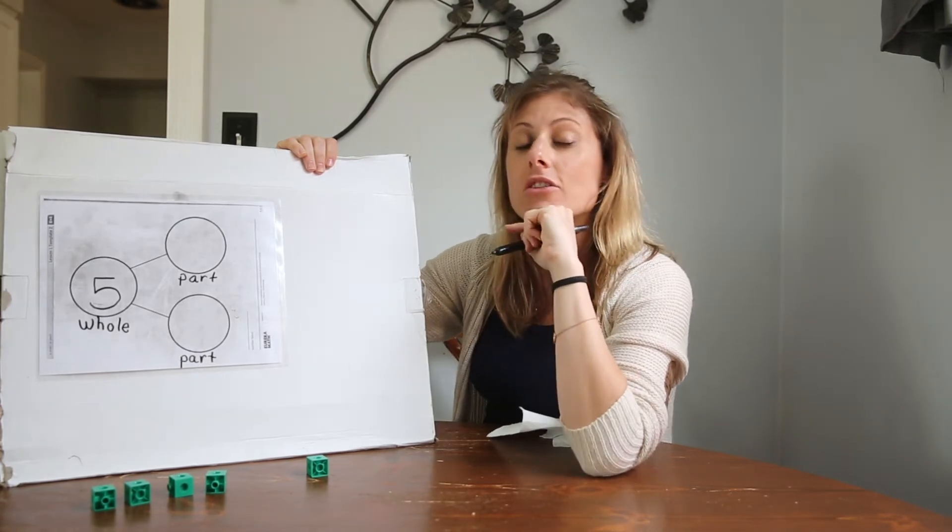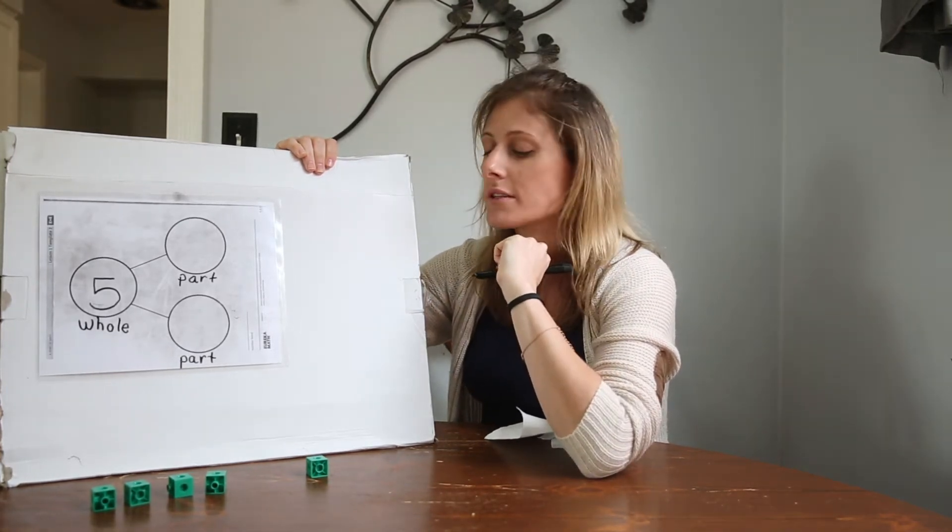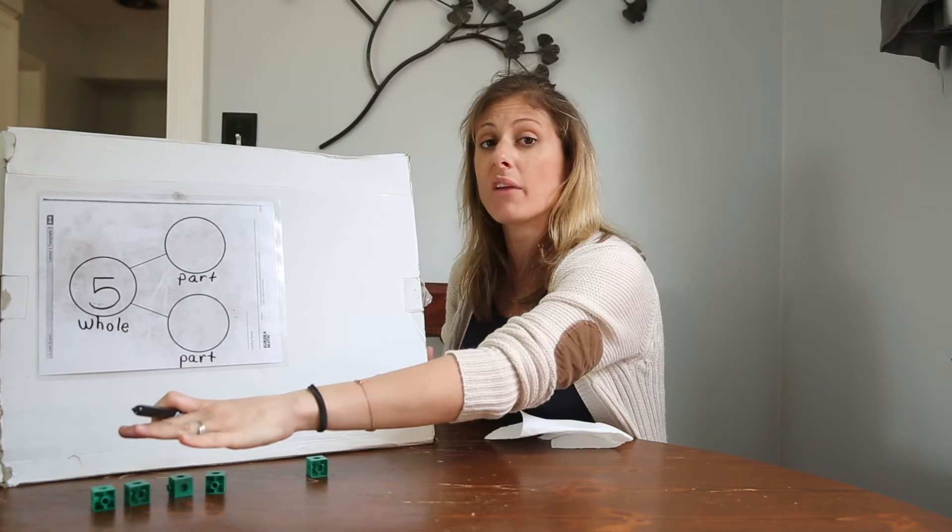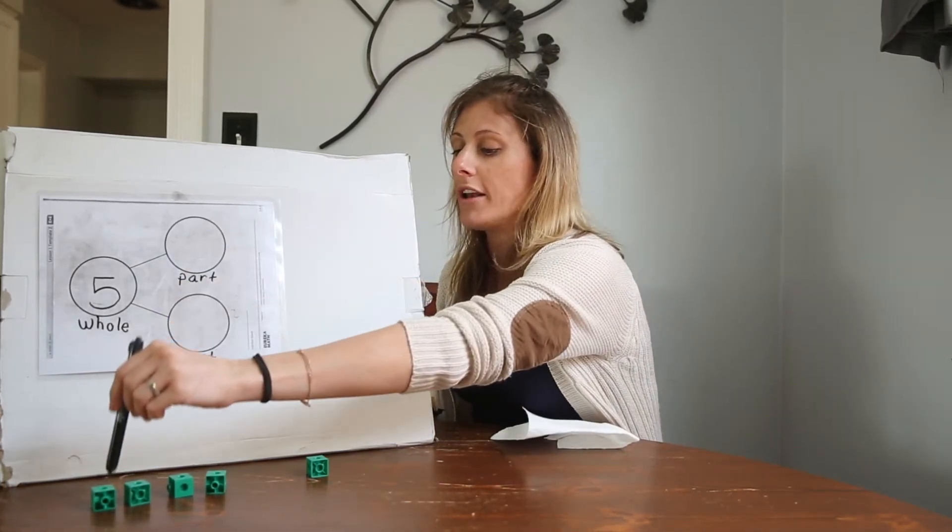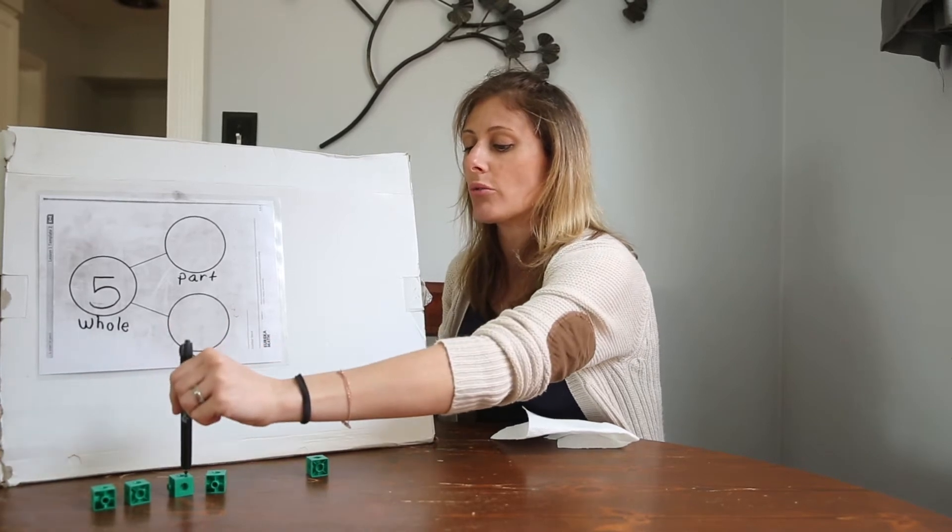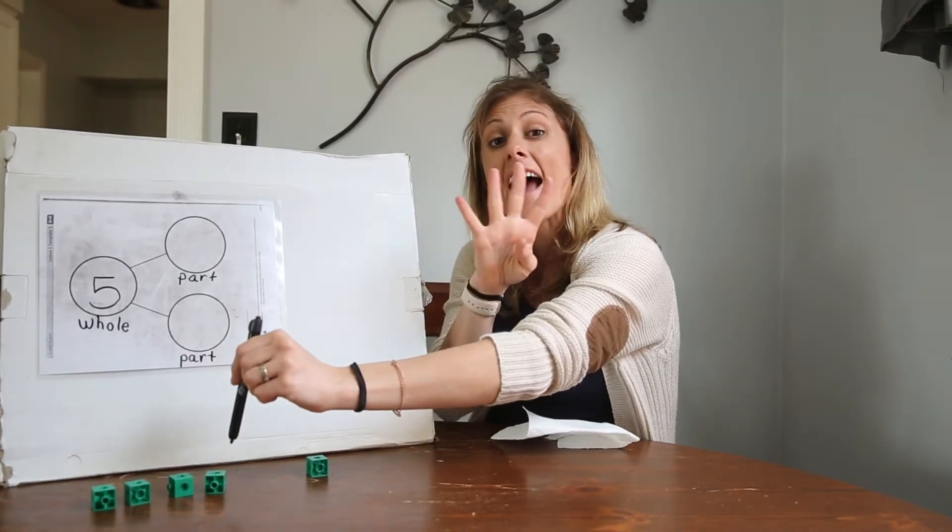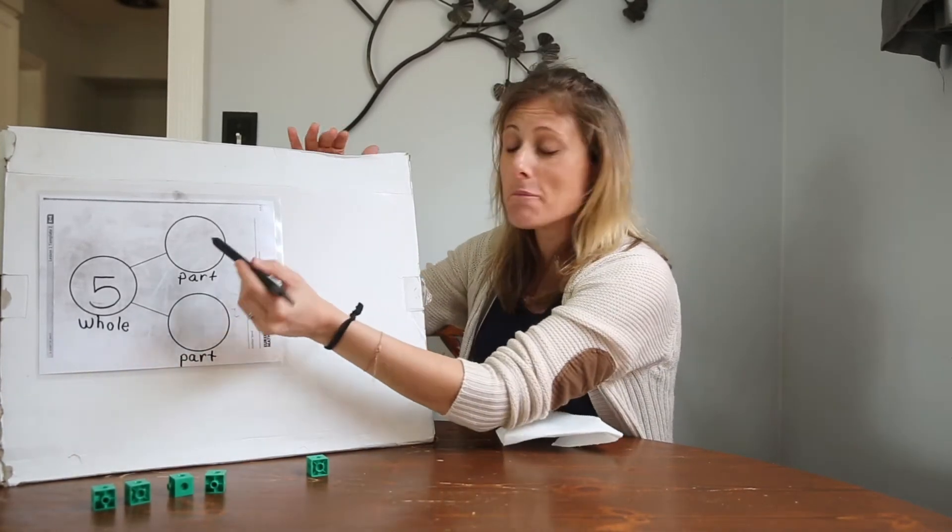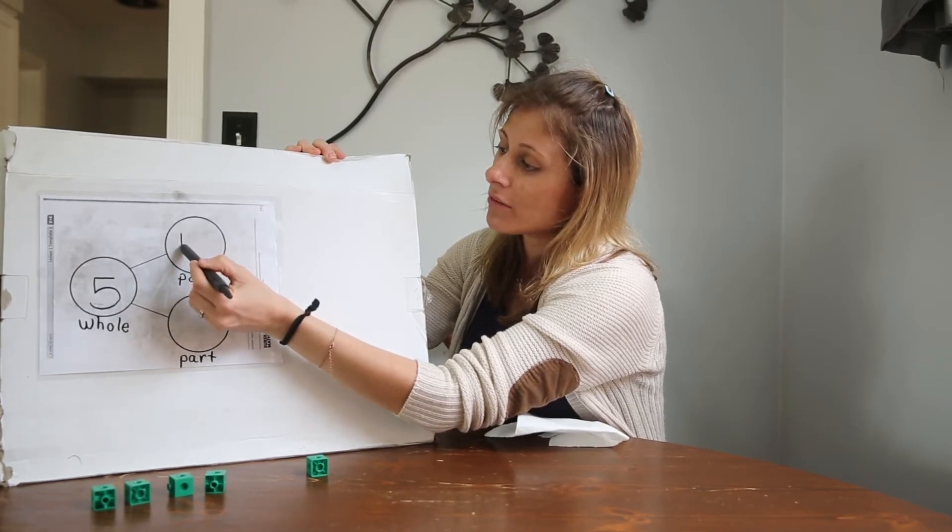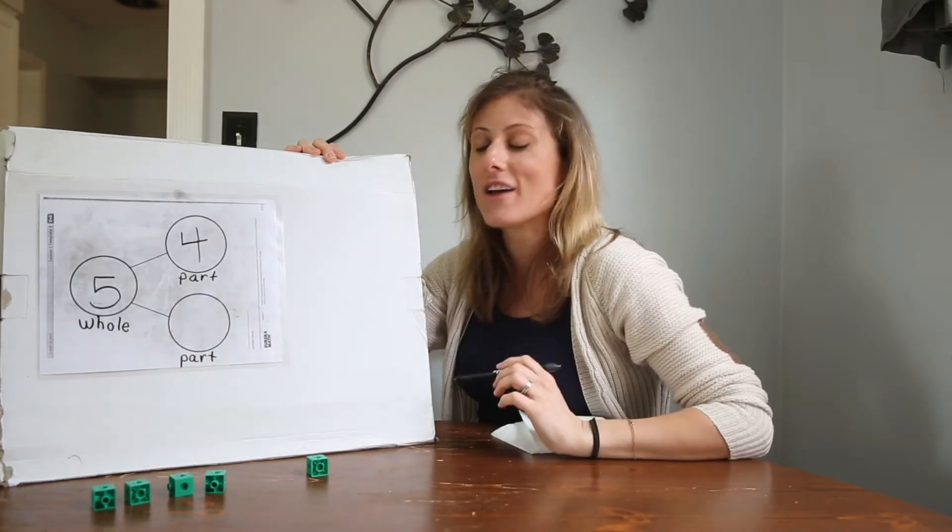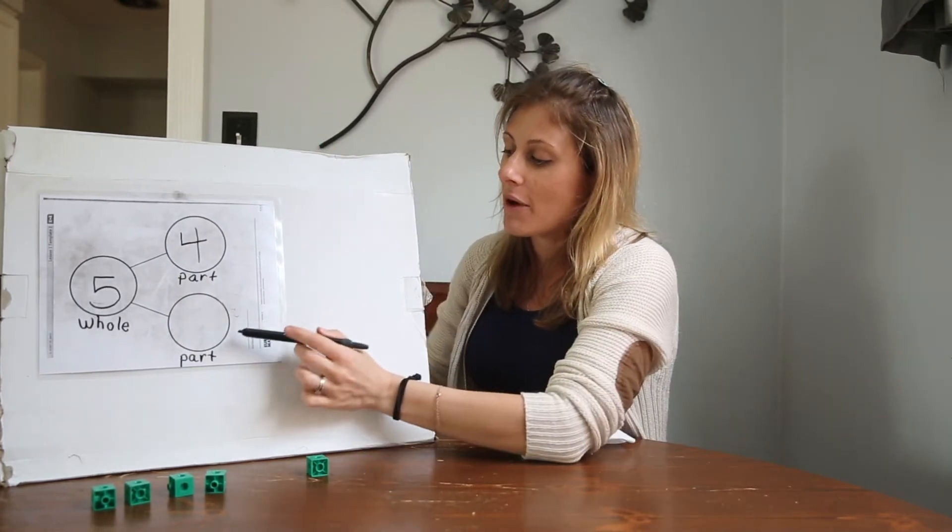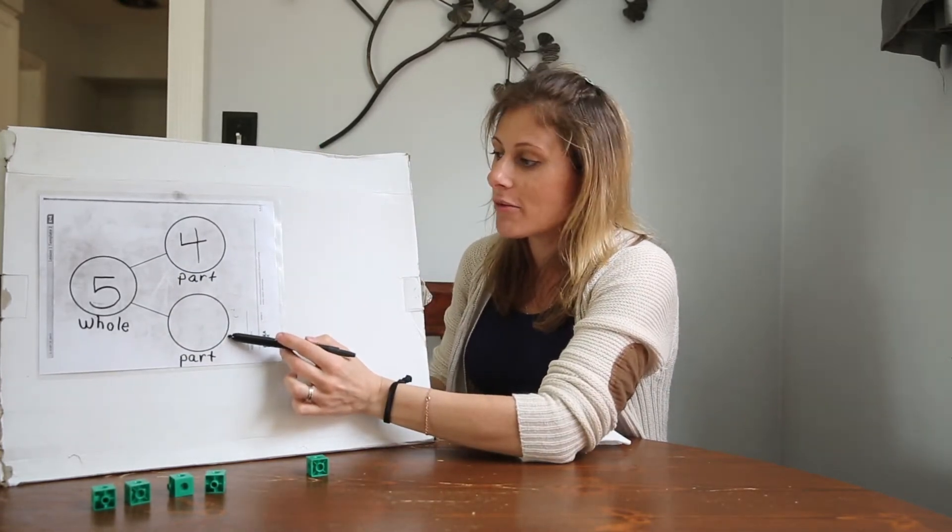Now I need to find the two different parts. So first I'm gonna count how many is in one part. Count with me. One, two, three, four. I have four in one part. Straight down, go across, down one more and that's a four.